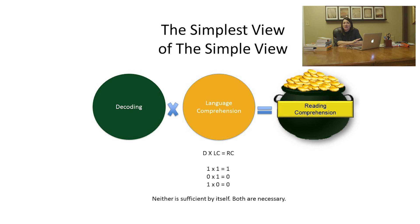Some people get confused when they see language comprehension and reading comprehension — reading comprehension represents print. Mathematically, reading comprehension, our goal, is the product of decoding and language comprehension. You need to be able to understand the words, and you need to be able to decode the words. If one of those components is lacking, reading comprehension is going to be negatively impacted.